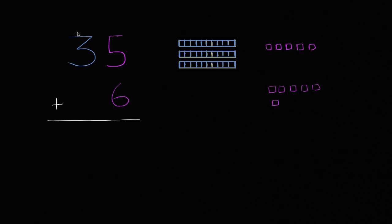So we have the number 35. The three is in the tens place, so it represents 30, or three tens. One ten, two groups of ten, three groups of ten. And then the five is in the ones place, so it represents five ones.